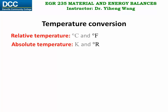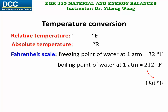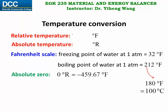For degree Fahrenheit and degree Rankine, they use the same Fahrenheit scale, for which the freezing point of water is 32 degrees Fahrenheit and the boiling point is 212 degrees Fahrenheit. The difference is 180 degrees Fahrenheit, which equals 100 degrees Celsius. The absolute zero on the Fahrenheit scale is zero degree Rankine, which equals negative 459.67 degrees Fahrenheit. To convert between degree Fahrenheit and degree Rankine, there is no multiplication factor involved — you only need to do addition or subtraction.